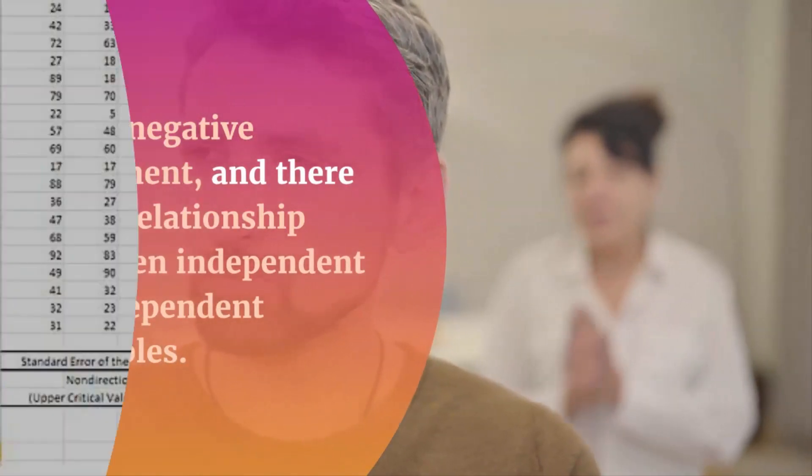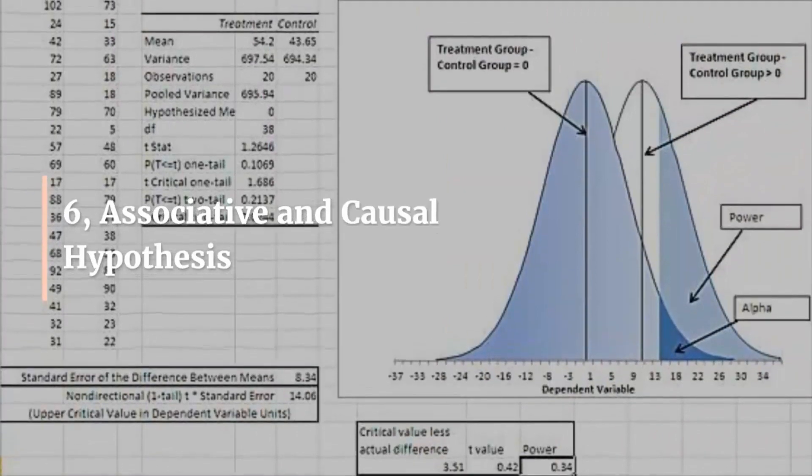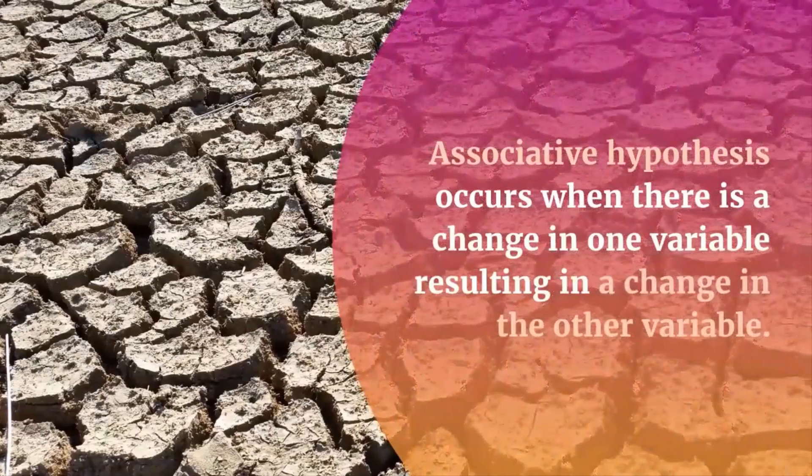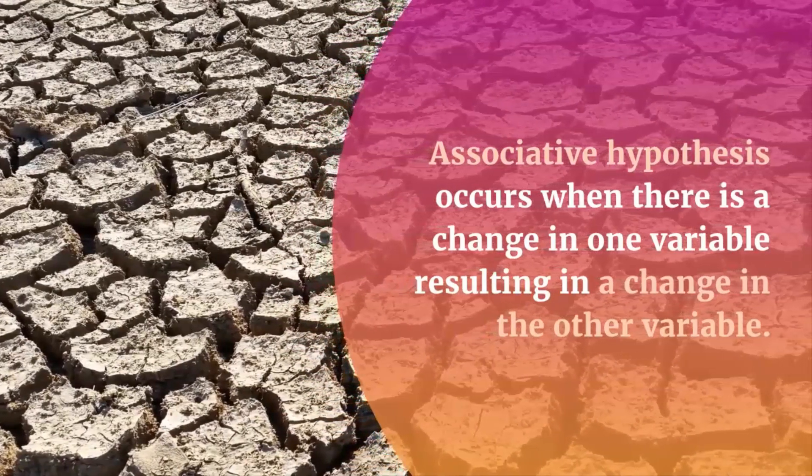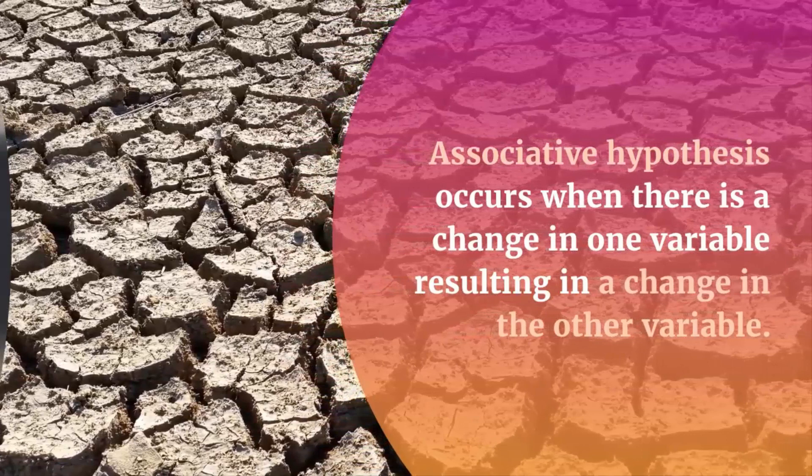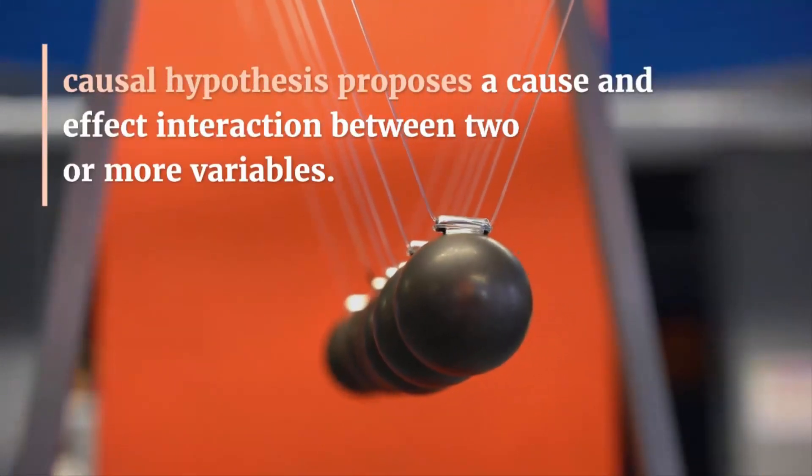6. Associative and causal hypothesis. Associative hypothesis occurs when there is a change in one variable resulting in a change in the other variable. Whereas, causal hypothesis proposes a cause and effect interaction between two or more variables.